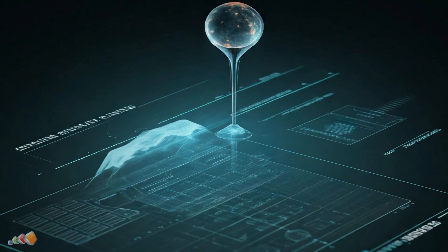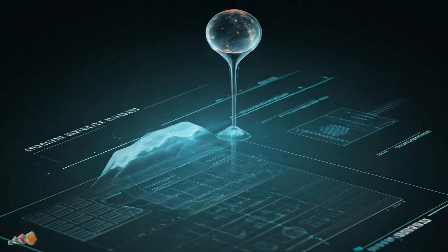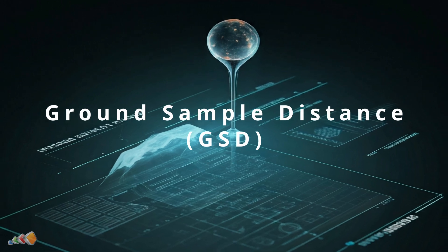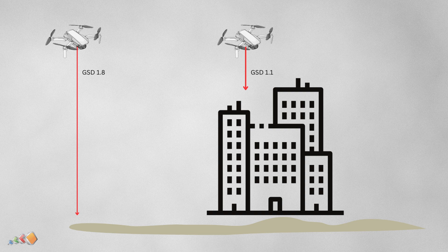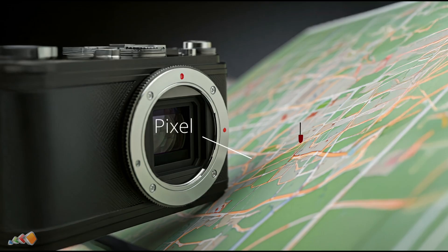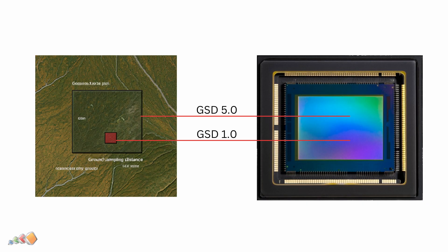Today we're going to cover an important concept for anyone getting into drone mapping: ground sample distance, or GSD for short. GSD is a way to define the level of detail in each picture taken relative to the ground you're photographing. It's generally measured in centimeters per pixel — each pixel on a camera sensor relates to a certain amount of area coverage on the ground. For example, a GSD of one centimeter per pixel means each pixel represents one square centimeter on the ground.